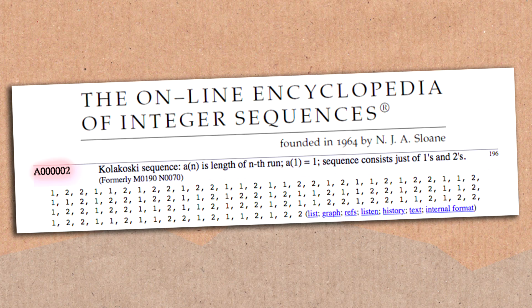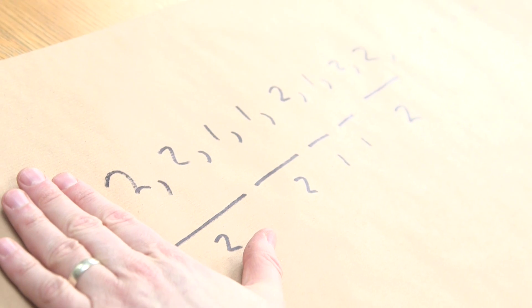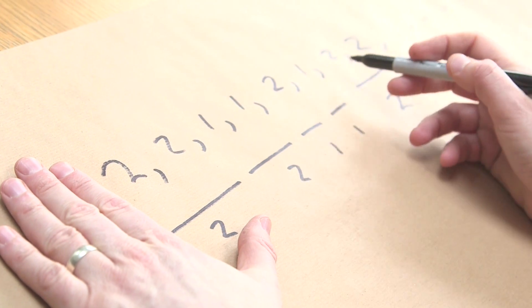In fact, there are only two sequences that have this property. And it's this one and this one, which is the Kolakovsky sequence without the one. So it begins two, two, one, one, two, one, two, two.